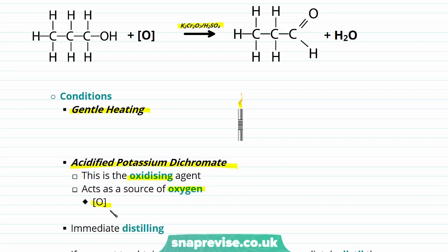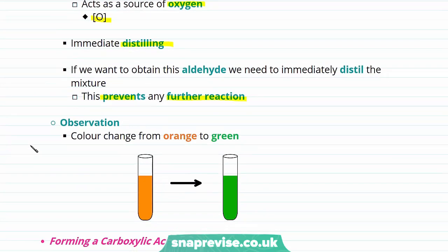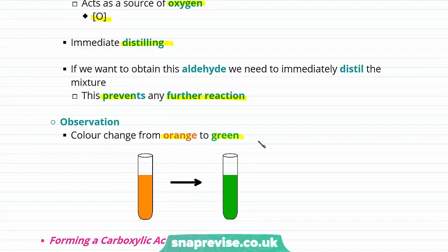The oxidizing agent acts as a source of oxygen, and we can represent it in our equation as an O given in square brackets. Now, if we want to obtain our aldehyde — which in this case would be propanal — we must immediately distill the reaction mixture. This is in order to prevent any further reaction and any further oxidation. In this reaction, we'll observe a color change from orange to green as oxidation has occurred.